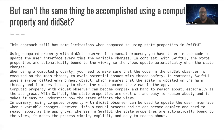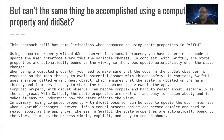Can't the same thing be accomplished using a computed property and didSet? When you set a variable in your view controller and want the state of your view to reflect that, you can use didSet so that when the variable is set, something automatically takes place. However, this approach has limitations compared to using state properties in SwiftUI. Using a computed property with a didSet observer is a manual process — you have to write code to update the UI every time the variable changes. In contrast, SwiftUI state properties are automatically bound to views, so views update automatically when the state changes.